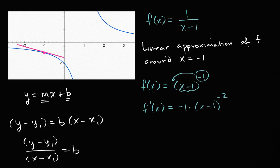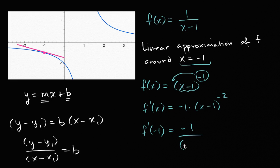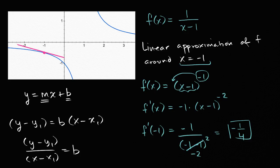Let's evaluate that when x is equal to negative one. f prime of negative one is equal to negative one over (negative one minus one) squared. The denominator is negative two squared, which is four. So this equals negative one fourth. The slope of our tangent line is m equals negative one fourth.